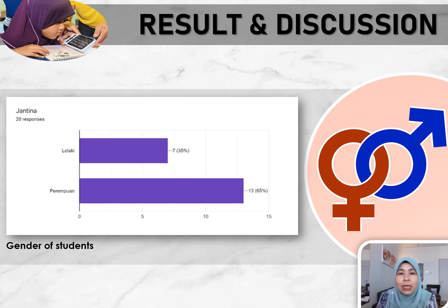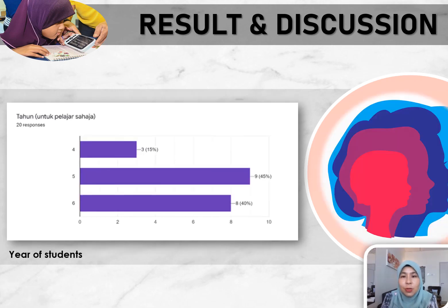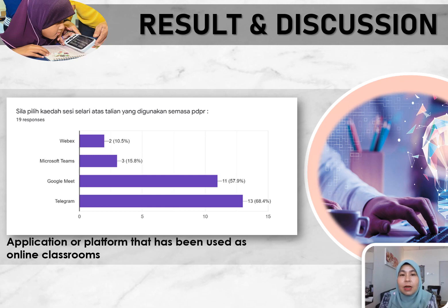The figures represent the gender of students who answered the survey. The graph shows that 65% of respondents are female while 35% are male. This question was addressed to students from year 4, year 5, and year 6. According to responses, 50% are from year 4, 45% from year 5, and 40% from year 6. The graph also shows the platforms used as online classrooms: 10.5% use WebEx, 15.8% use Microsoft Teams, 15.8% use Google Meet, and 68.4% use Telegram.